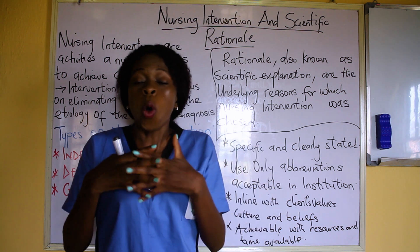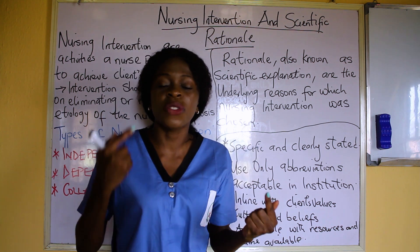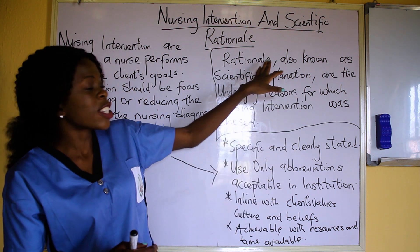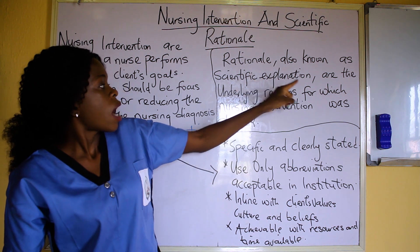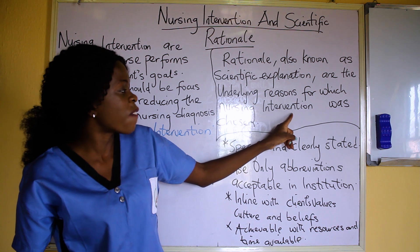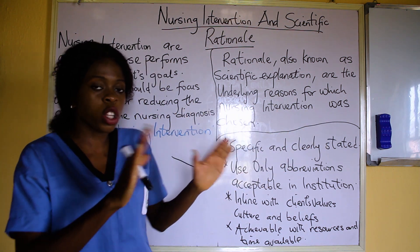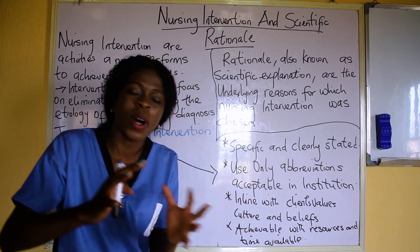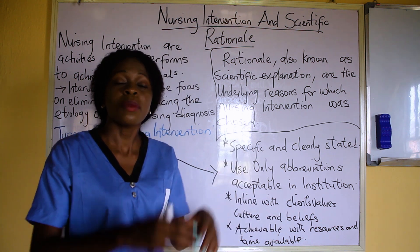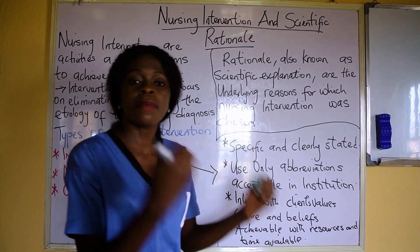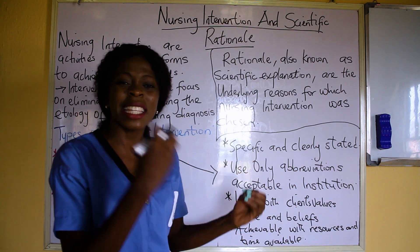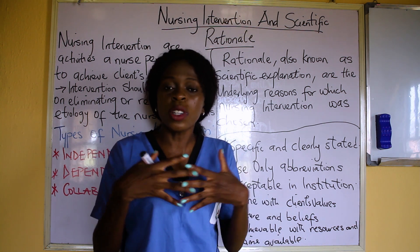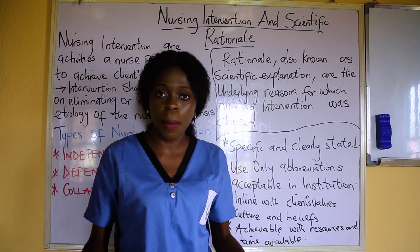Going hand in hand with nursing intervention is the scientific rationale. The scientific rationale is simply your explanation — it is the scientific explanation for which the nursing intervention was chosen. The nursing intervention is what you are to do; the rationale is the scientific explanation of why you are doing what you are doing. Why am I giving diversional therapy? Why am I placing my patient in a semi-Fowler's position? That is what scientific rationale is all about.